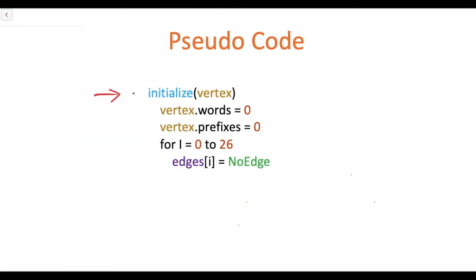This is the code for initialize. The function takes a vertex as a parameter to initialize. Since it is a new vertex, the number of words formed till this vertex is 0, and the number of prefixes till this vertex is also 0. And since there are no edges going out from this vertex, we initialize all its children to null — no edges.